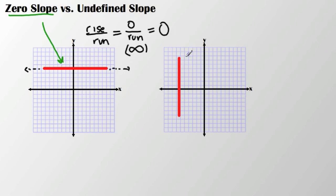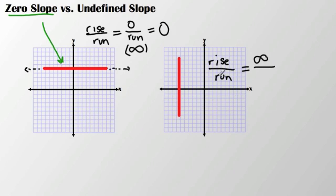What about a vertical line? In terms of rise over run, the rise keeps going on forever — some sort of infinite value. But the run is zero, because there is no movement whatsoever along the horizontal axis. And as we know, you cannot divide by zero — try it on your calculator. That is what gives you an undefined slope.